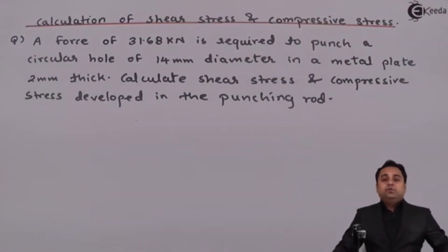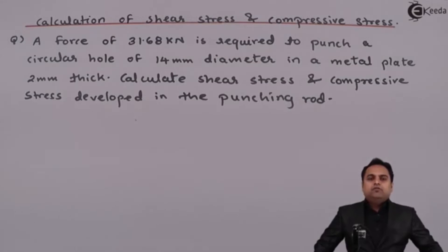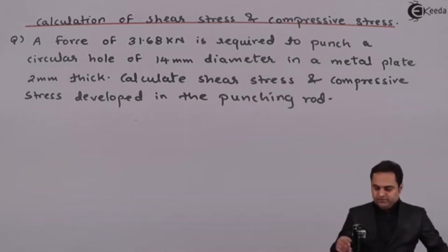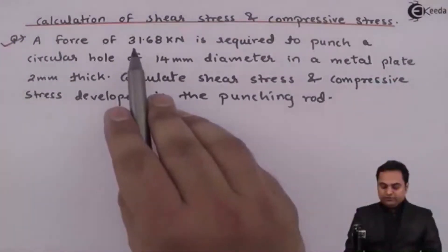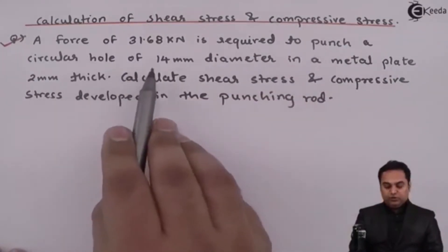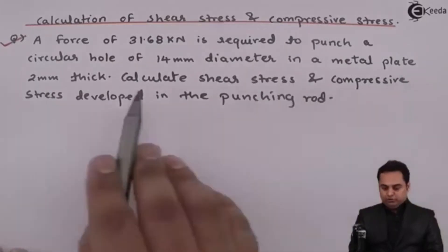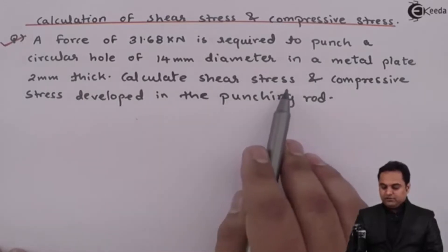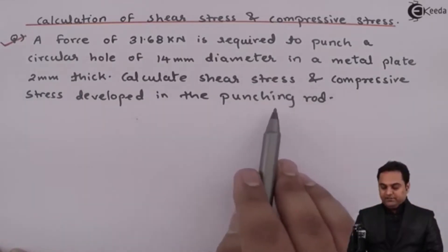In this video we are going to see a problem based on calculation of shear stress and compressive stress for a plate in which a hole is punched. A force of 31.68 kN is required to punch a circular hole of 14 mm diameter in a metal plate 2 mm thick. Calculate shear stress and compressive stress developed in the punching rod.